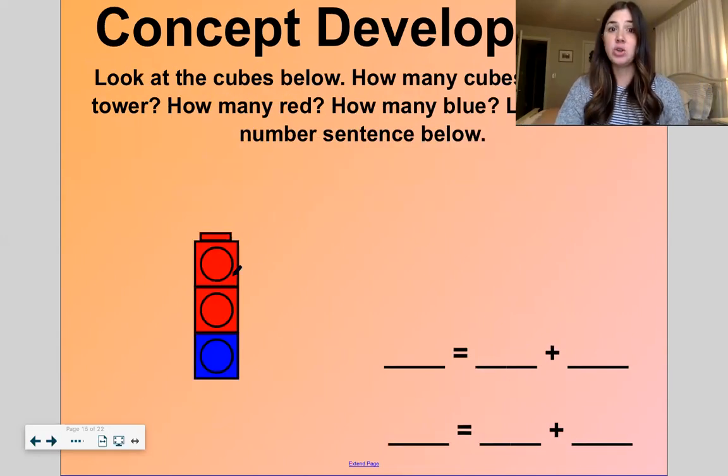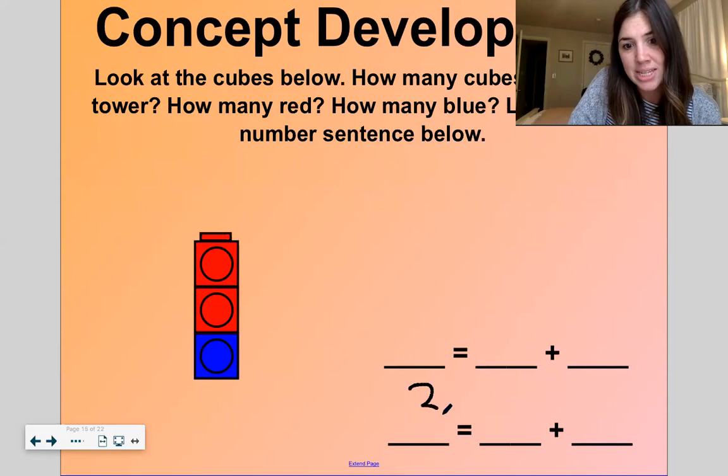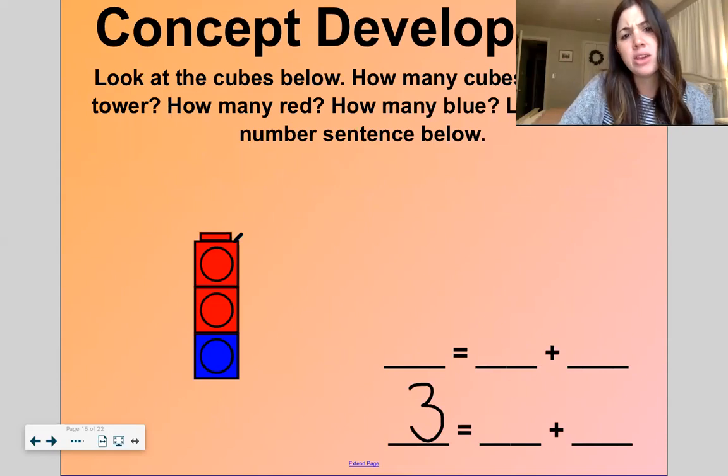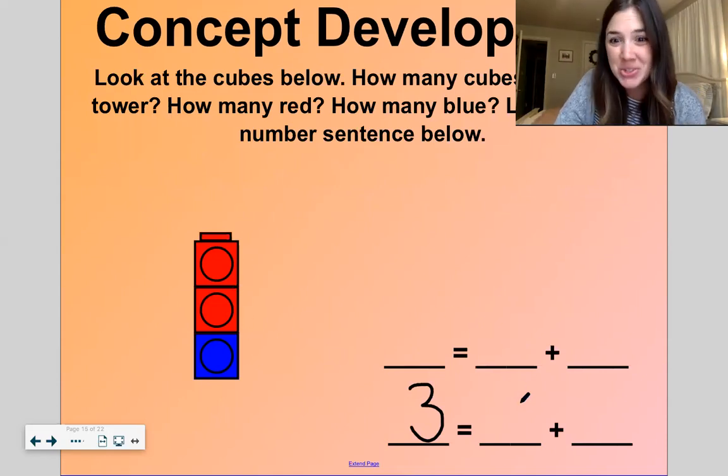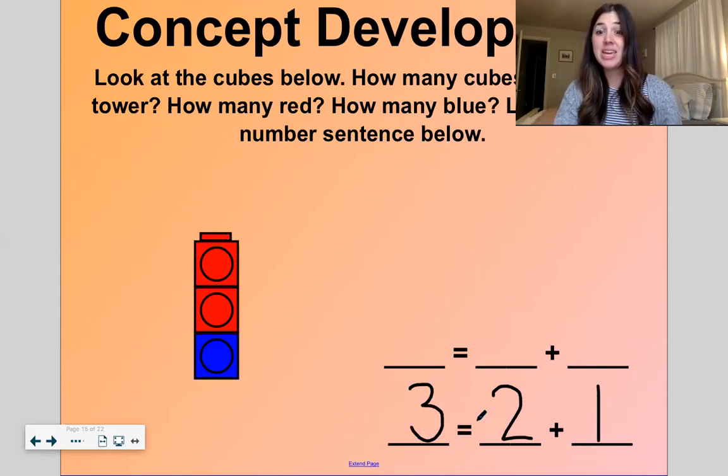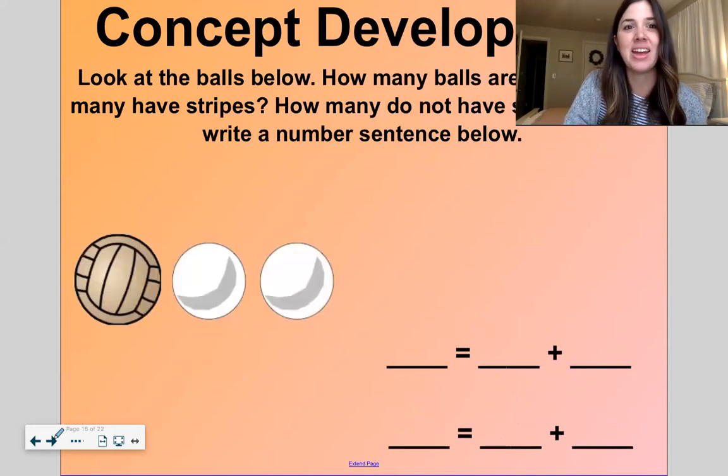Okay. So look at these cubes below. How many cubes are in the tower? One, two, three. Okay. So I'm gonna write a three here. How many cubes are blue? One. So this is my number sentence again. Three equals two and one. And it's the same thing as saying two and one makes three. You got it.